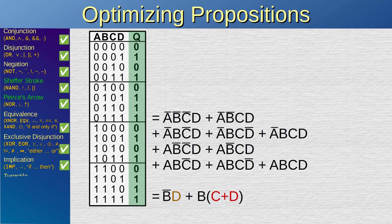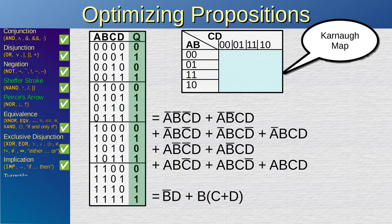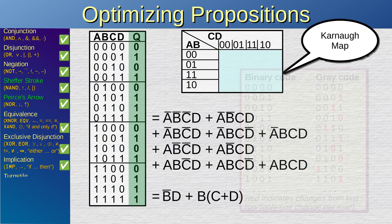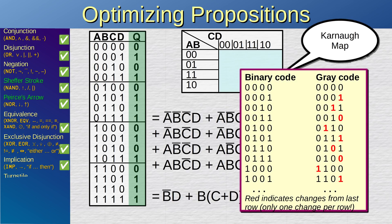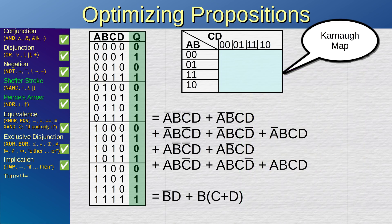Let me introduce a concept called Carnot maps. In a Carnot map, we transfer the truth table from a one-dimensional list into a two-dimensional grid, where half of the inputs are placed on the vertical axis and the rest on the horizontal axis. Furthermore, instead of a binary-coded order, the input combinations are ordered by gray code, where only one variable changes between successive rows or columns. The values are filled into the respective slots — 16 slots just like before.